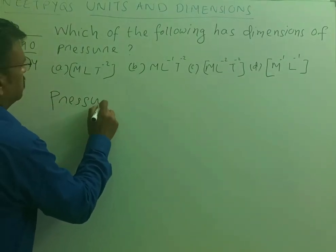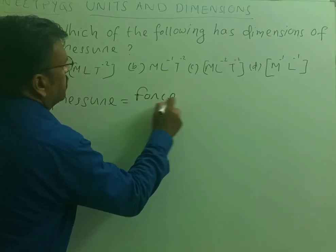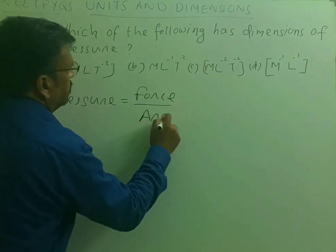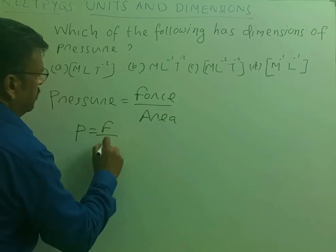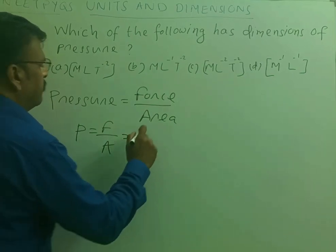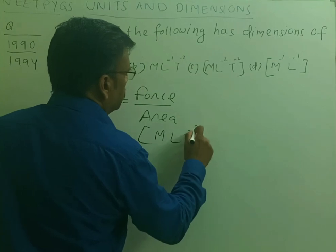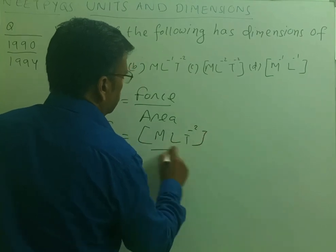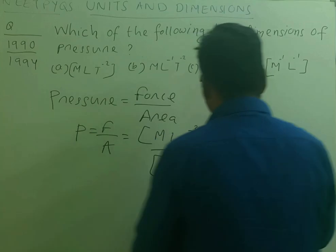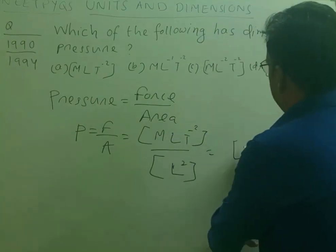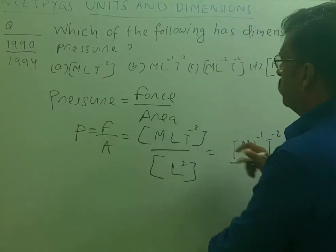Pressure is force per unit area. P is equal to F by A. What is the dimensional formula of force? It is M, L, T minus 2. And that of area? That is L squared. So this will be M, L minus 1, T minus 2.